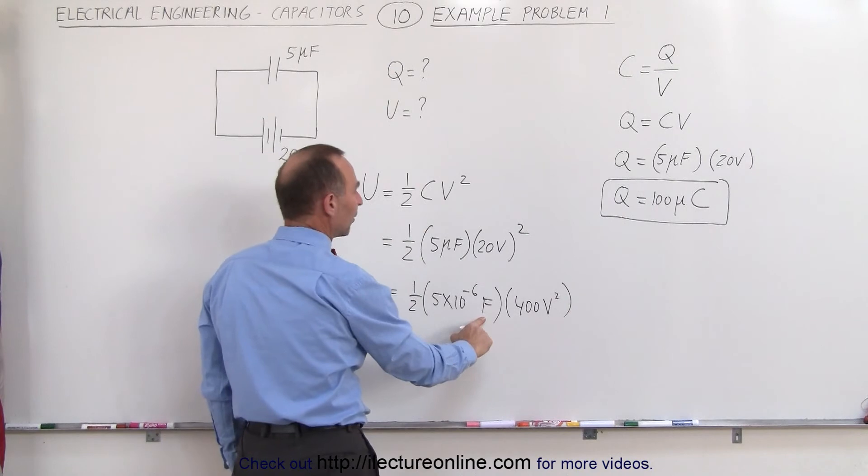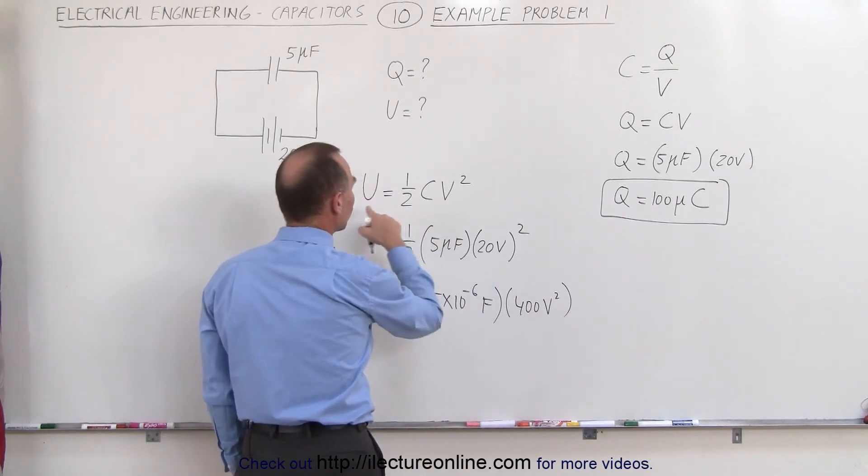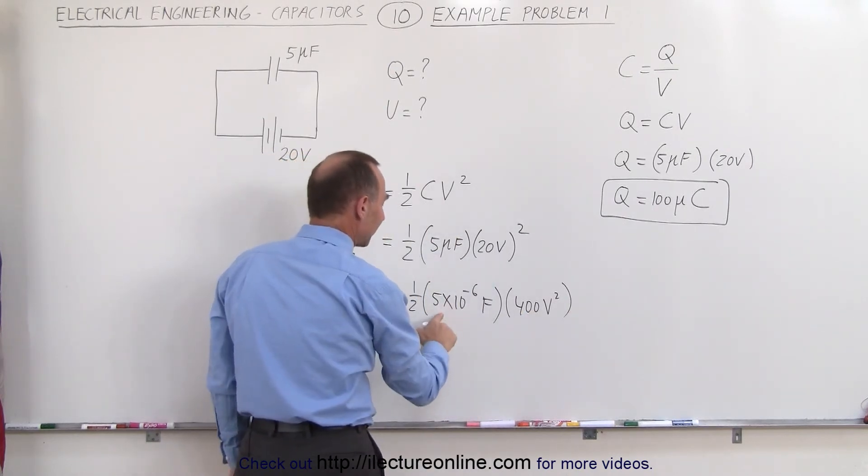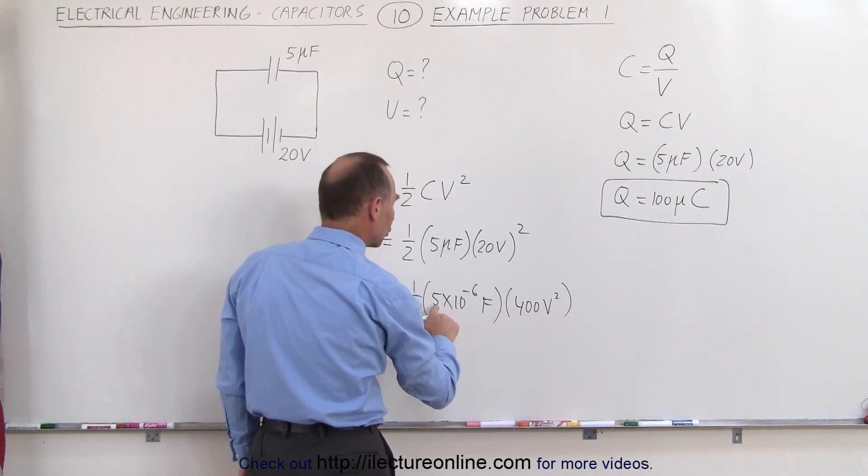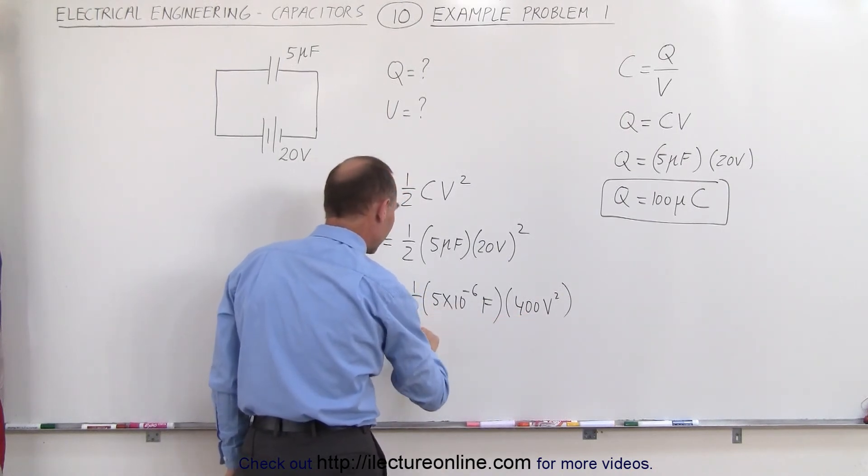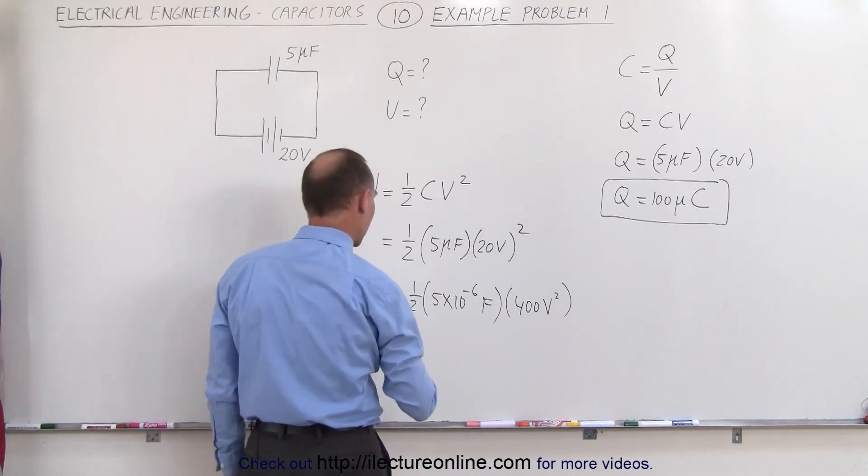The units of this farads times volts squared will give us joules. 5 times 10 to the minus 6 times 400, which is 2,000, or 2 times 10 to the minus 3 divided by 2, which is 1 times 10 to the minus 3.